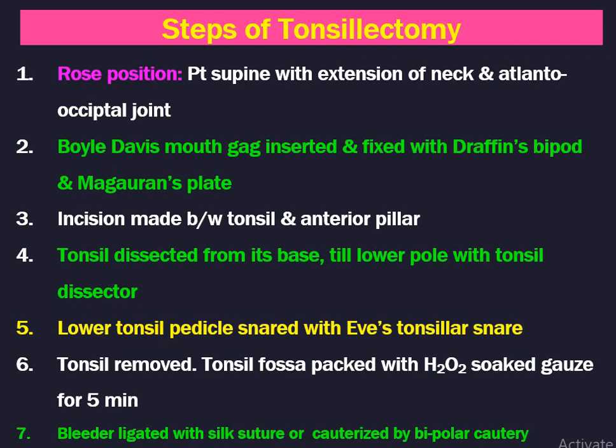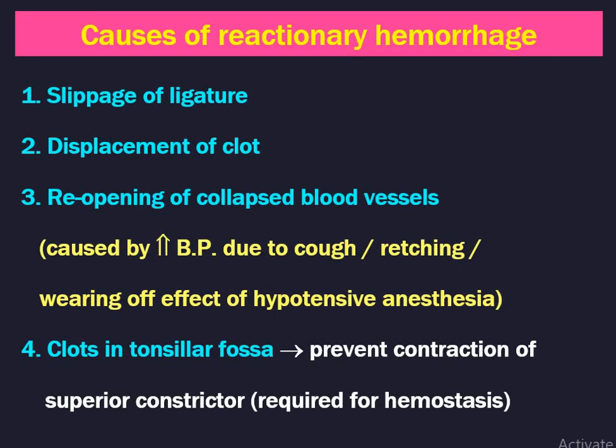If there is any bleeder, it is ligated with silk suture or cauterized by bipolar cautery. Nowadays it is very rare for bleeding to occur after tonsillectomy. Causes of reactionary hemorrhage may be asked: slippage of ligature, displacement of clots, reopening of collapsed blood vessels caused by increased blood pressure due to cough, retching, or wearing off of hypotensive anesthesia. During tonsil surgery the patient is on hypotensive anesthesia, but nowadays we don't require hypotensive anesthesia.